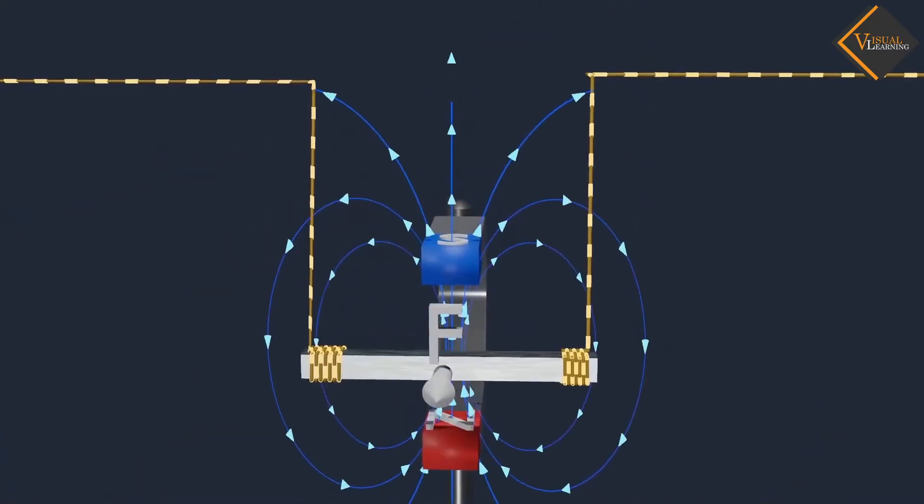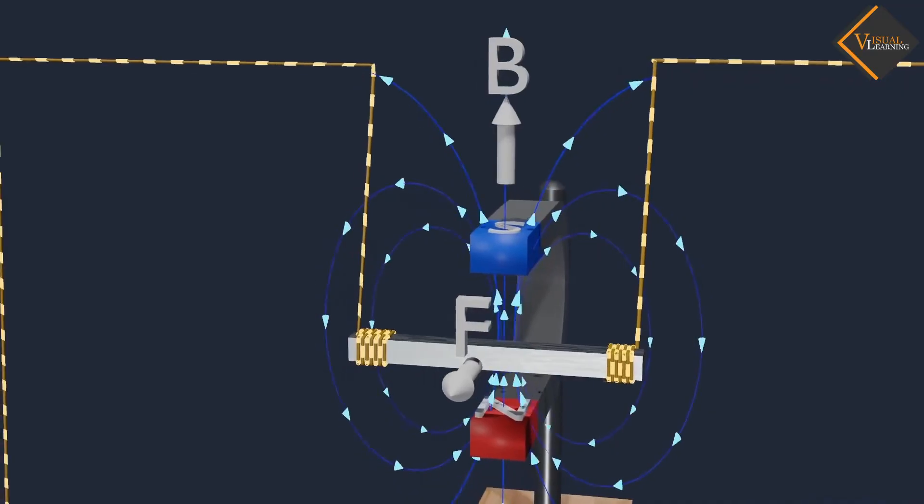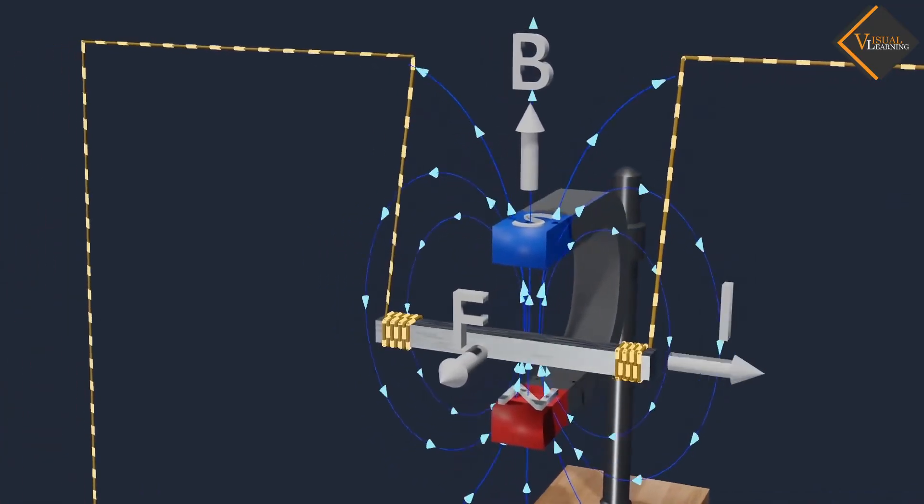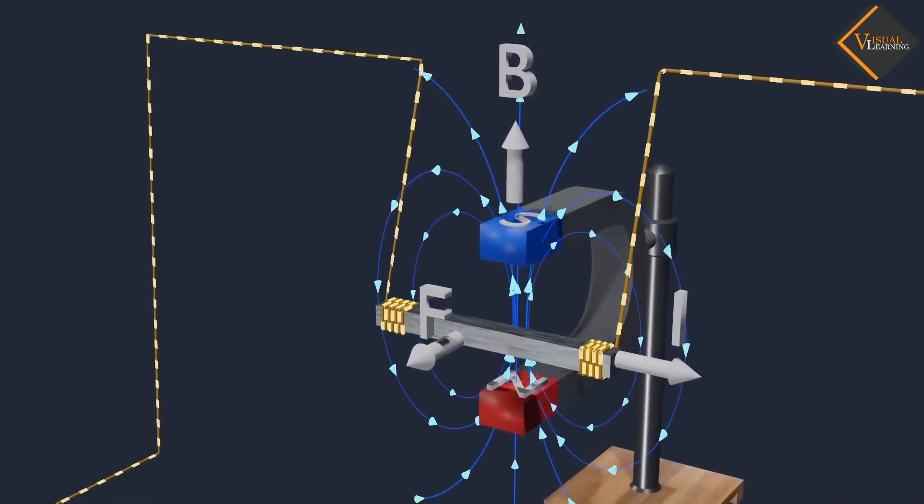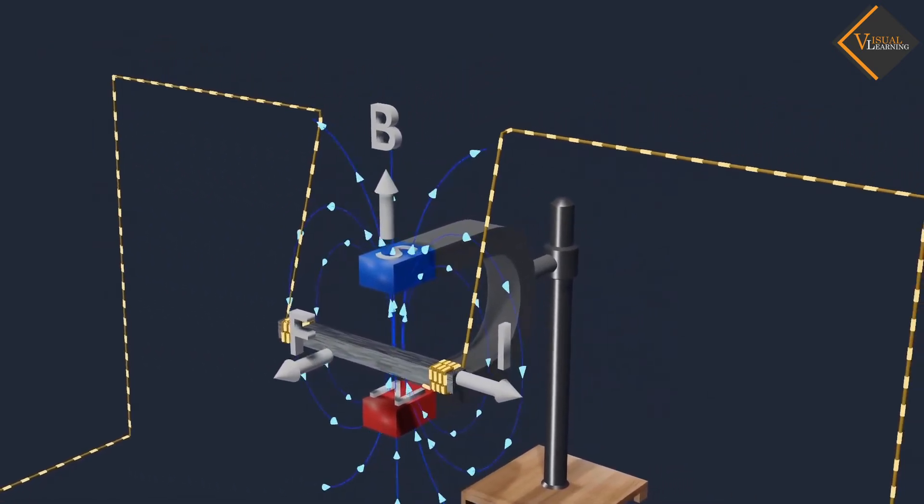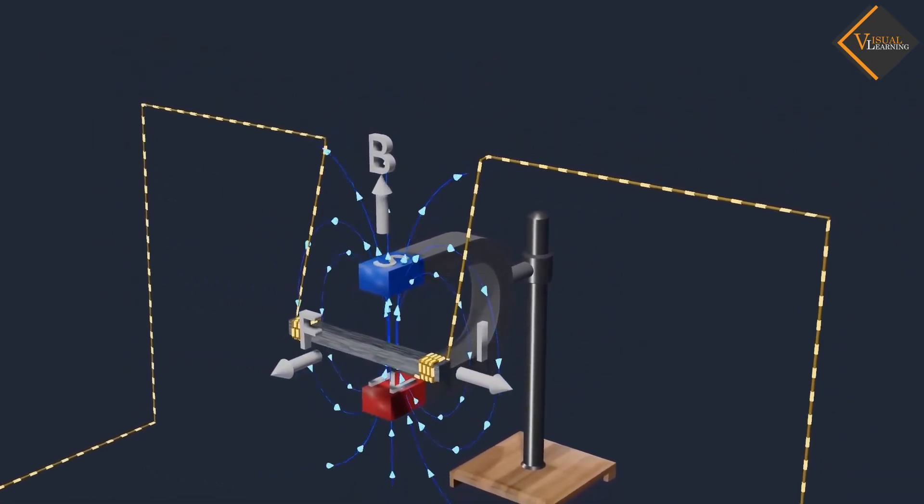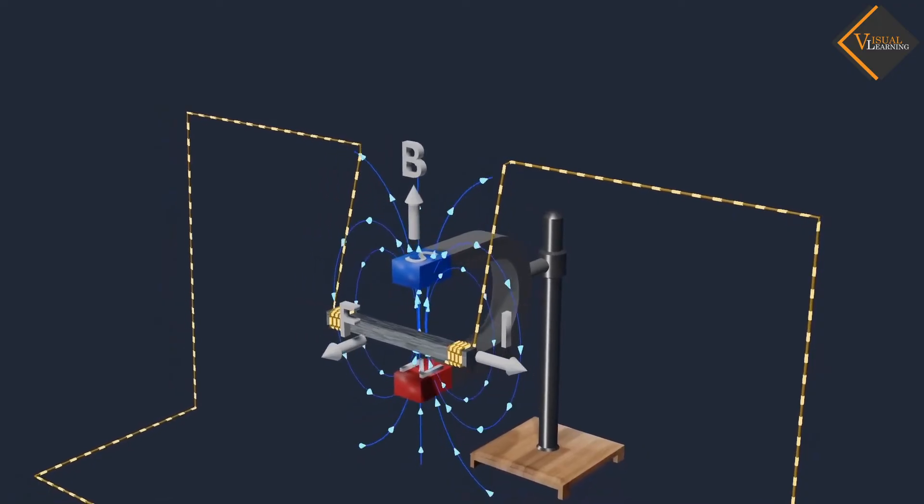In this scenario, magnetic field is acting vertically upward and the current is flowing right to left perpendicular to the magnetic field. So, the force on rod will be perpendicular to both magnetic field and the current.